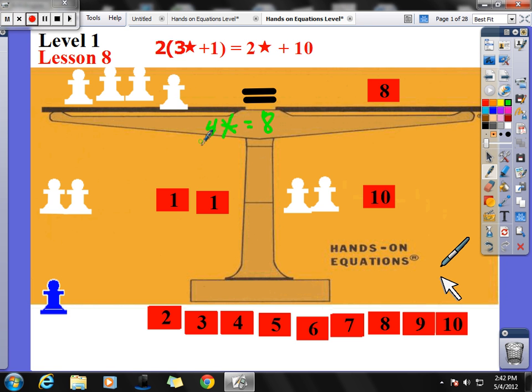The way we do that mathematically, remember boys and girls, we divide both sides of our equal sign by our coefficient, which is the number 4. So I divide this side by 4, and I divide this side by 4. 4 divided by 4 is 1. 1 times star is star all by itself. And star equals 8 divided by 4 is 2.